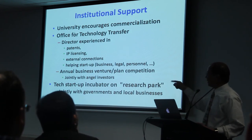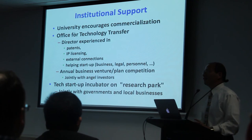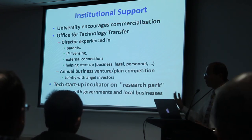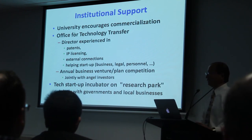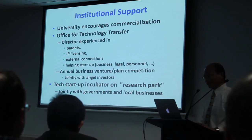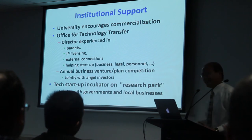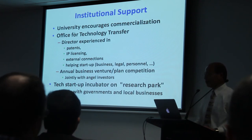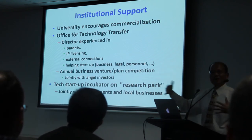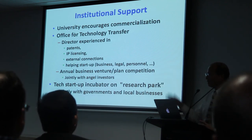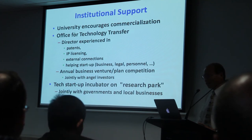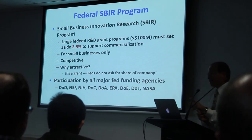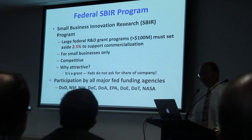The university also had a yearly competition called the Five Inch Companies competition — if you have a good idea, you enter, and it's run by the university together with local wealthy people happy to contribute seed money. Some universities also have a tech start-up incubator — a research park with joint ventures between university and local business. These incubators get support from governments as well. I also want to mention SBIR — a federal government funding mechanism — which is a great idea. The law says for any federal grant large enough, basically over $100 million, you have to set aside two and a half percent to support commercialization of the research.